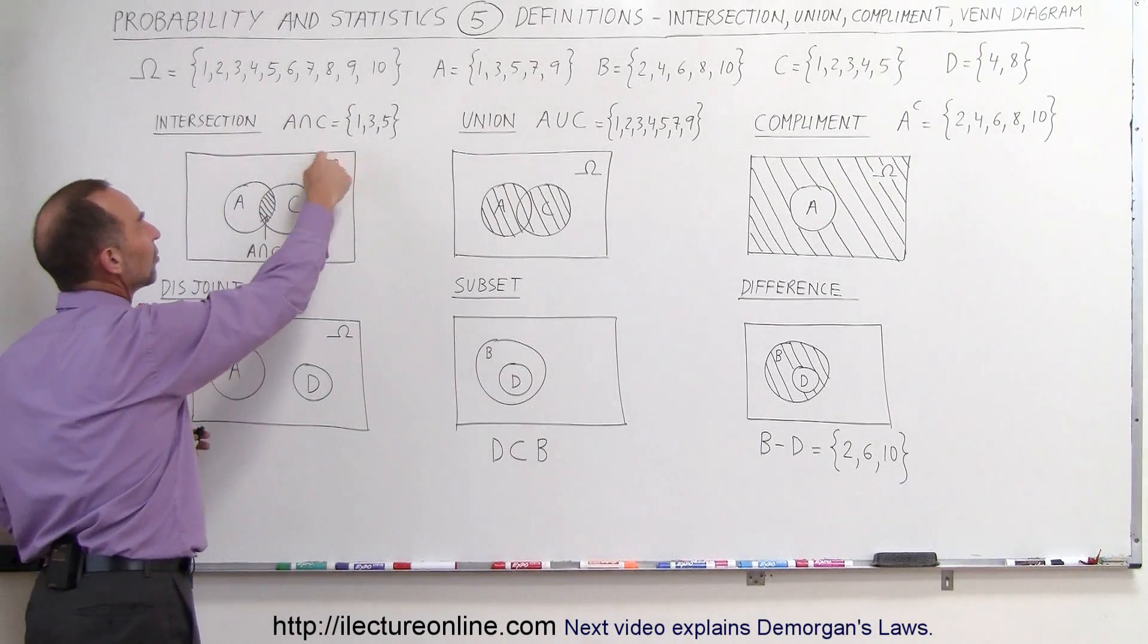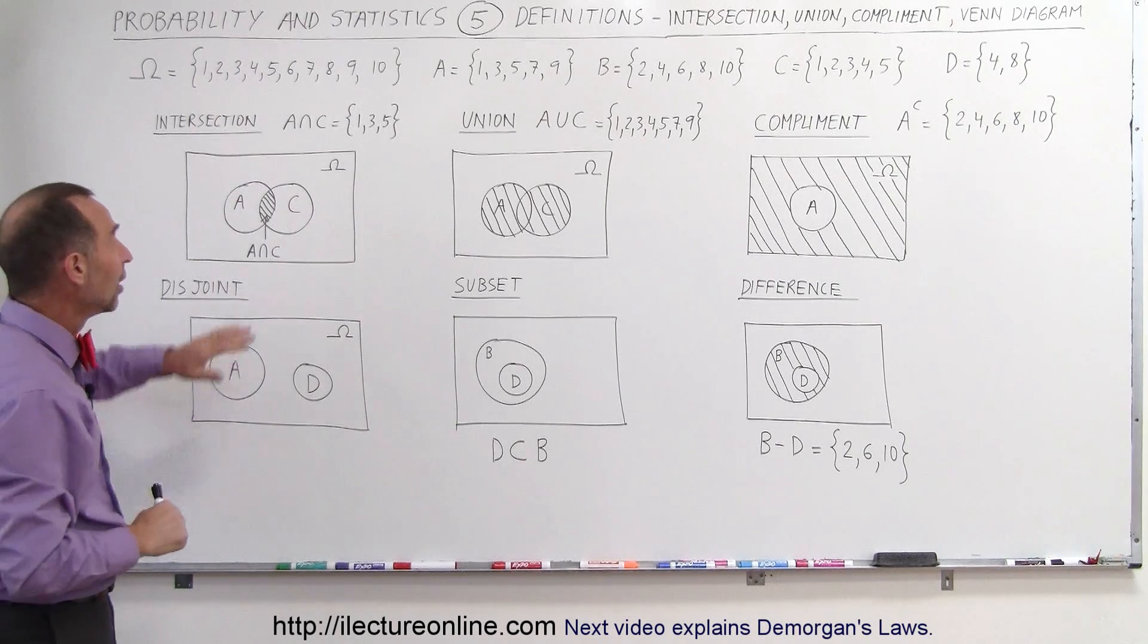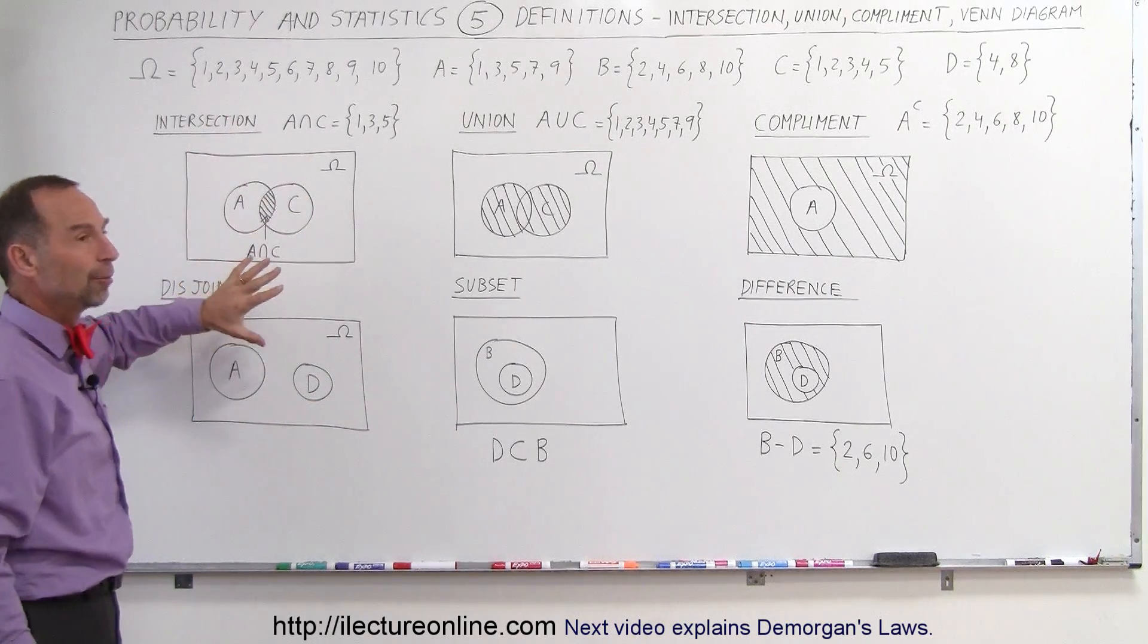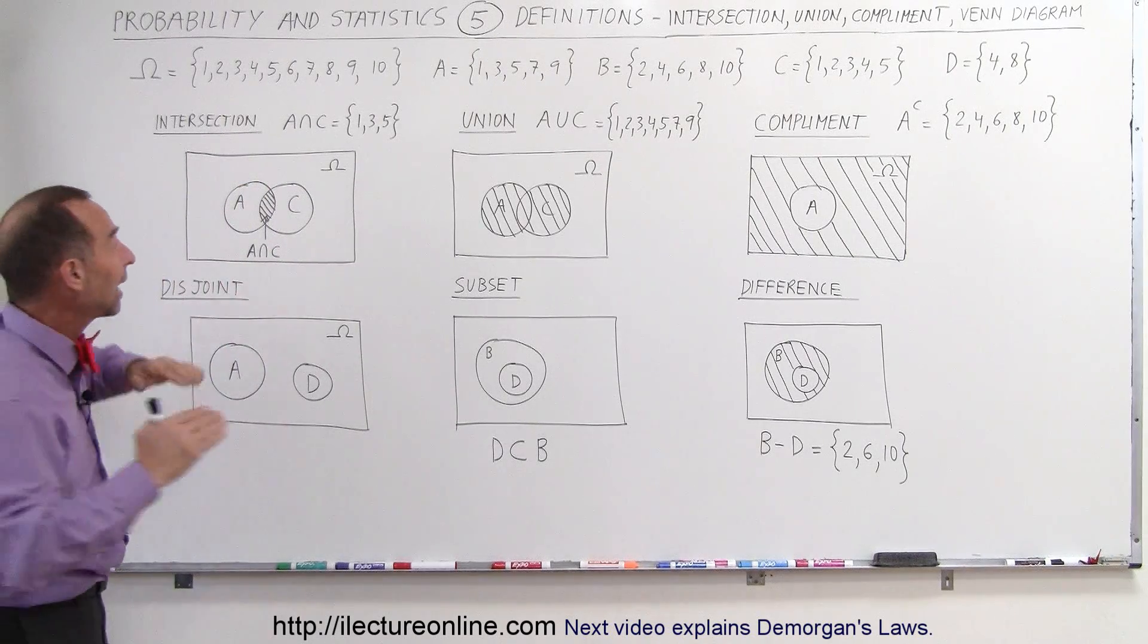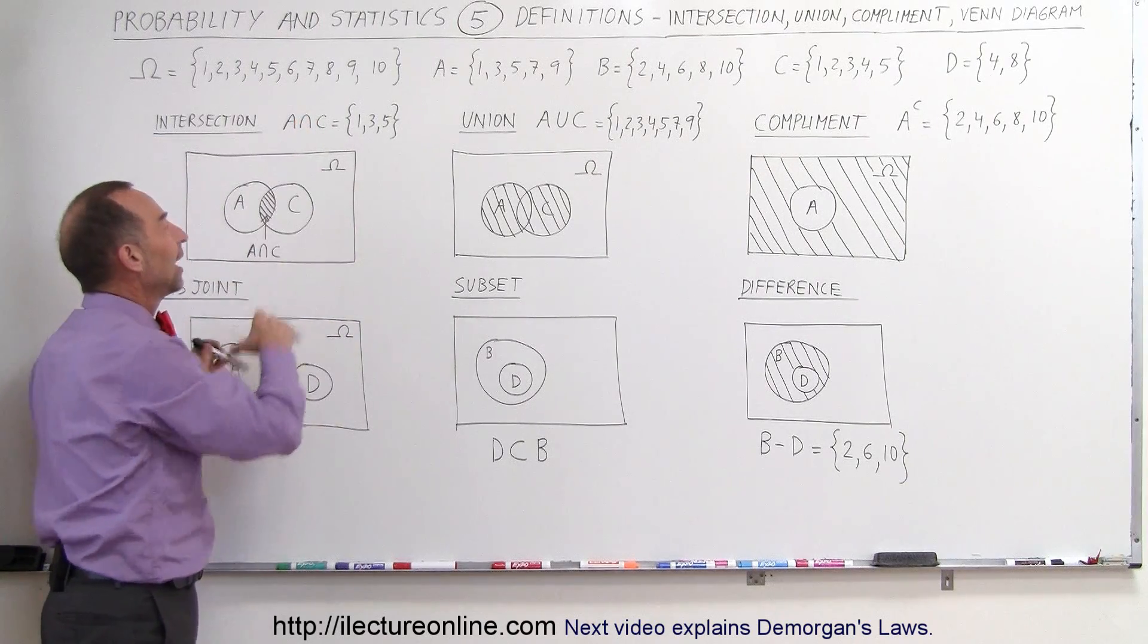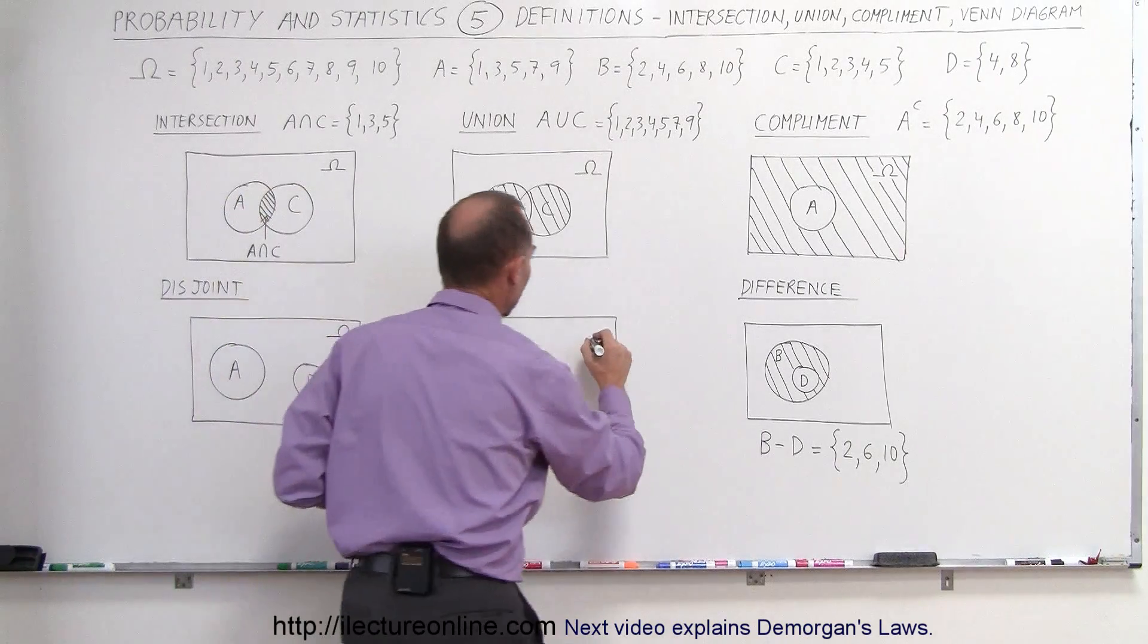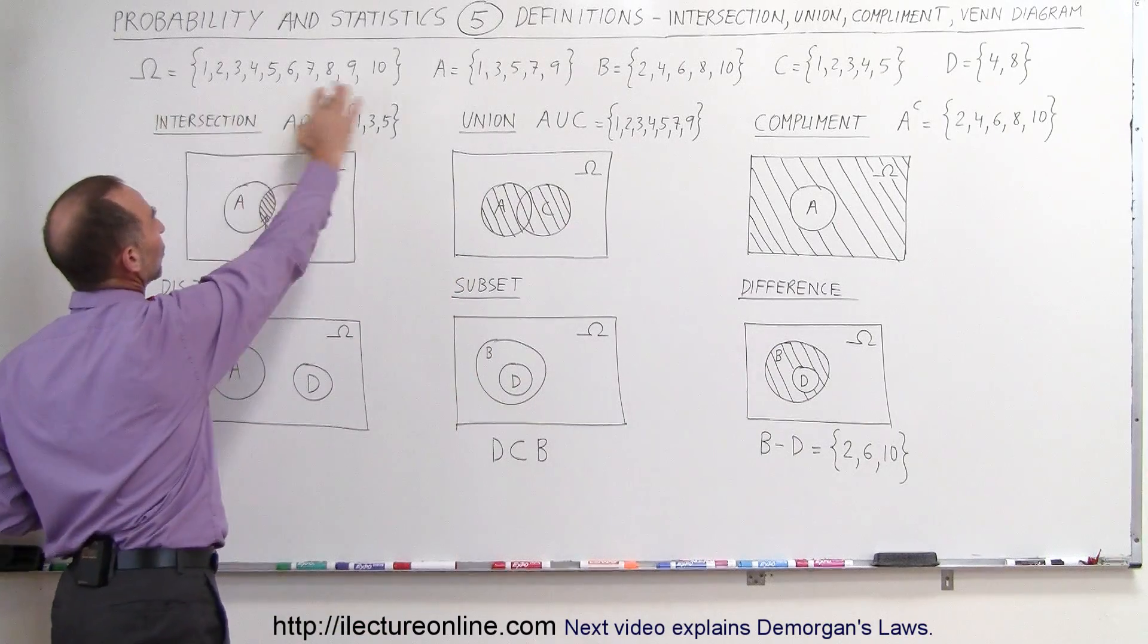Also notice we keep putting this symbol right here. This is the sample space that includes all the possible outcomes. This could be everything, the entire universe as we call it, or we can simply define it as the entire sample space, and then everything else is simply a subset of the sample space. In this case, whatever is in the box includes the entire sample space, all the numbers from 1 through 10.